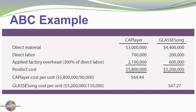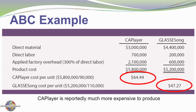Here is the company's calculation of material, labor, and applied overhead using traditional costing. Cap Player has a per-unit cost of $64.45, while Glasses Song appears far more profitable with a per-unit cost of $47.27. Since units sell for $60 each, Cap Player appears to be unprofitable under traditional costing.